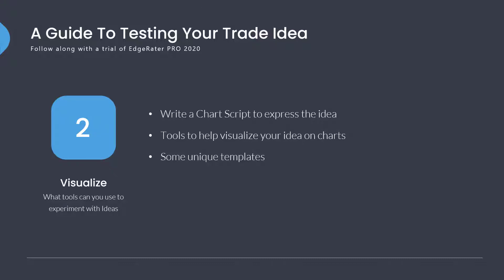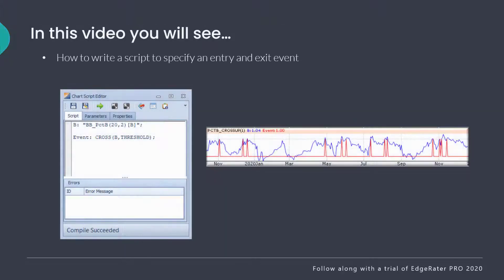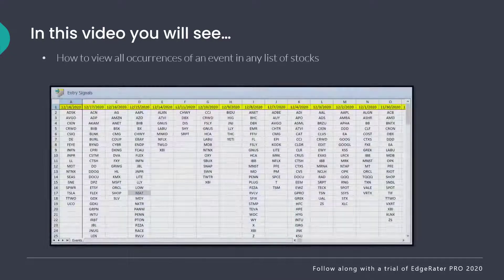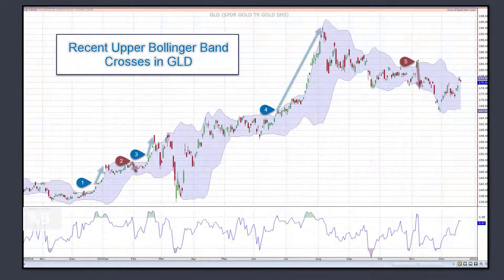Hello and welcome to the second video in the guide to testing your trade idea. This video is all about the visualization stage and I'll show how to take a trade idea and see charts showing entry and exit events. That's going to involve writing some chart script, which is a basic building block for the rest of the phases. You'll also learn how to easily see if your particular entry point has an edge on its own with the POPO template, which stands for probability of touch, probability of expiry. And we'll also see how to view all entry events from an entire list of stocks over the entire history of data. Remember from the first video that the idea I want to test is Bollinger Band crosses and in particular if you can build a profitable trading system based around Bollinger Bands alone. So let's get started.